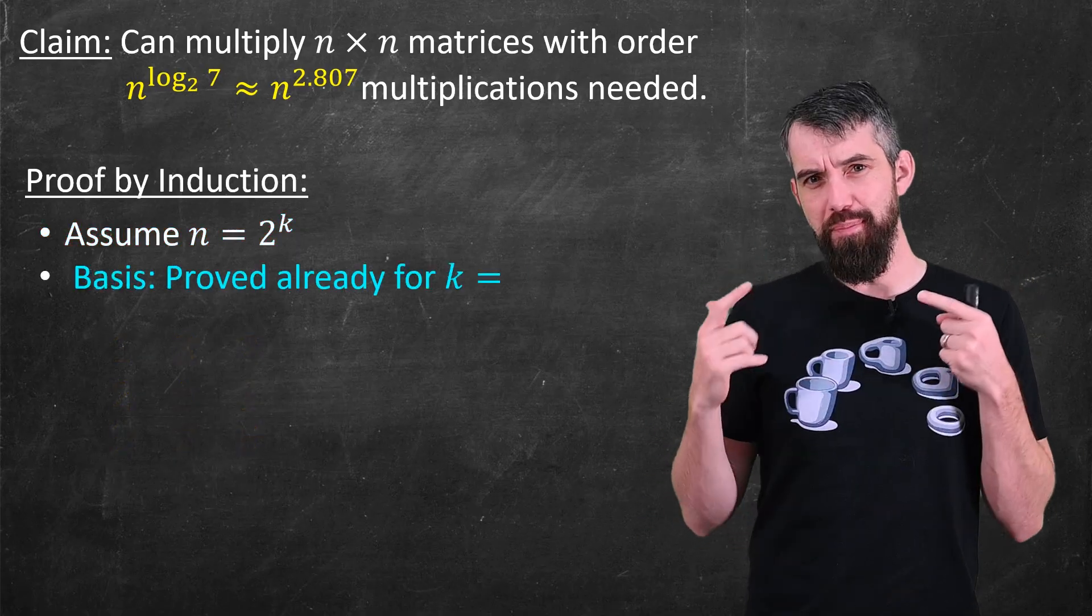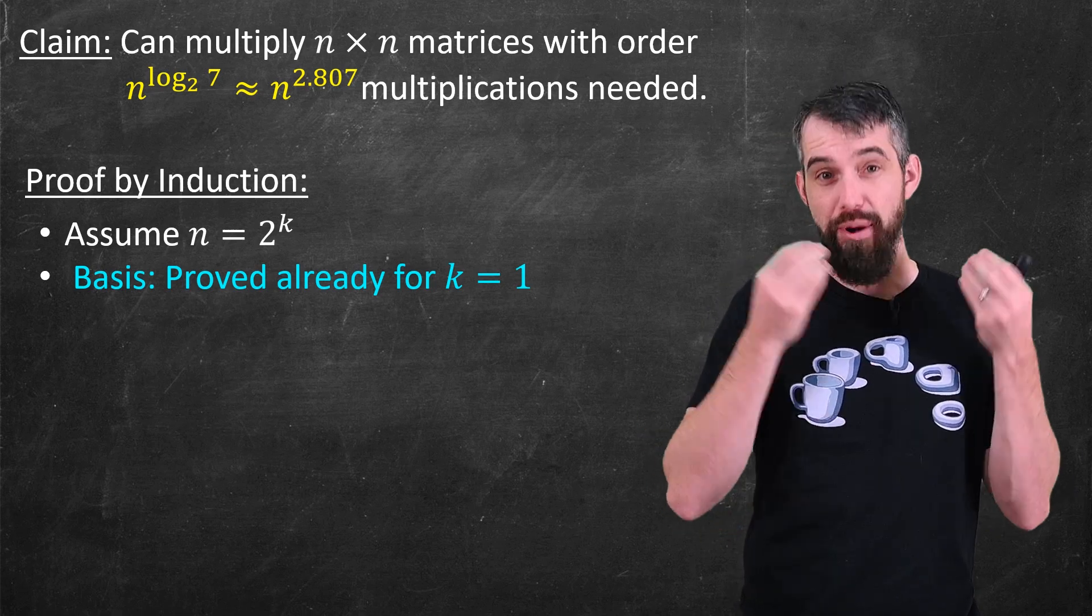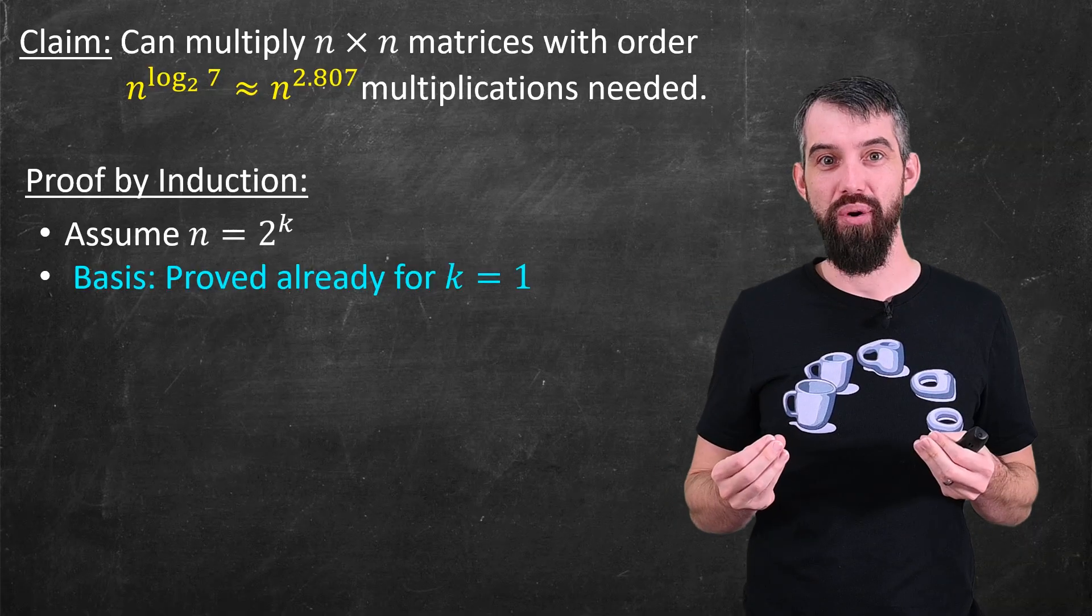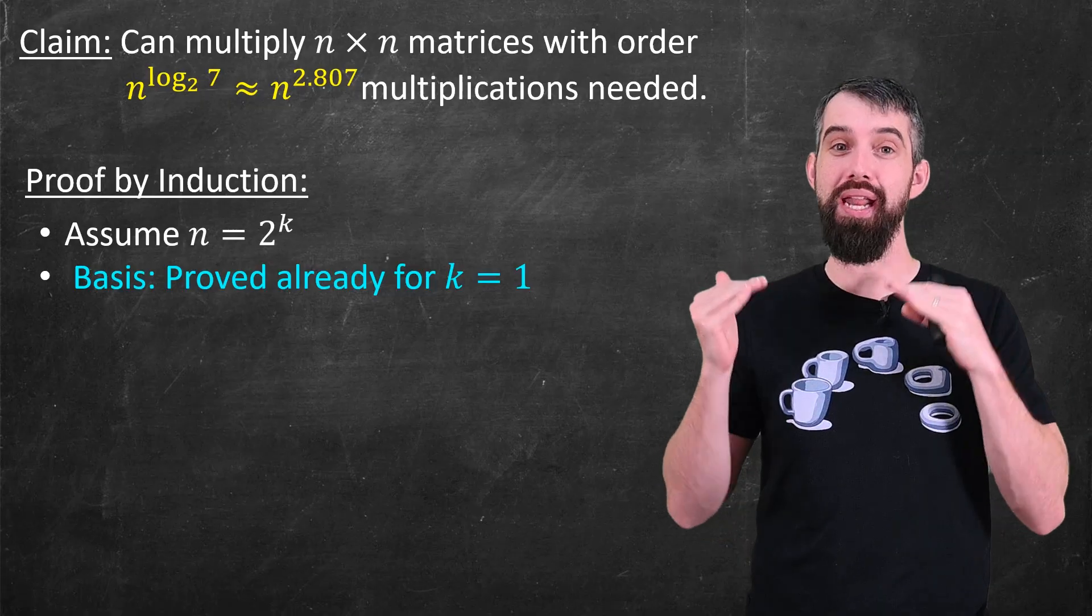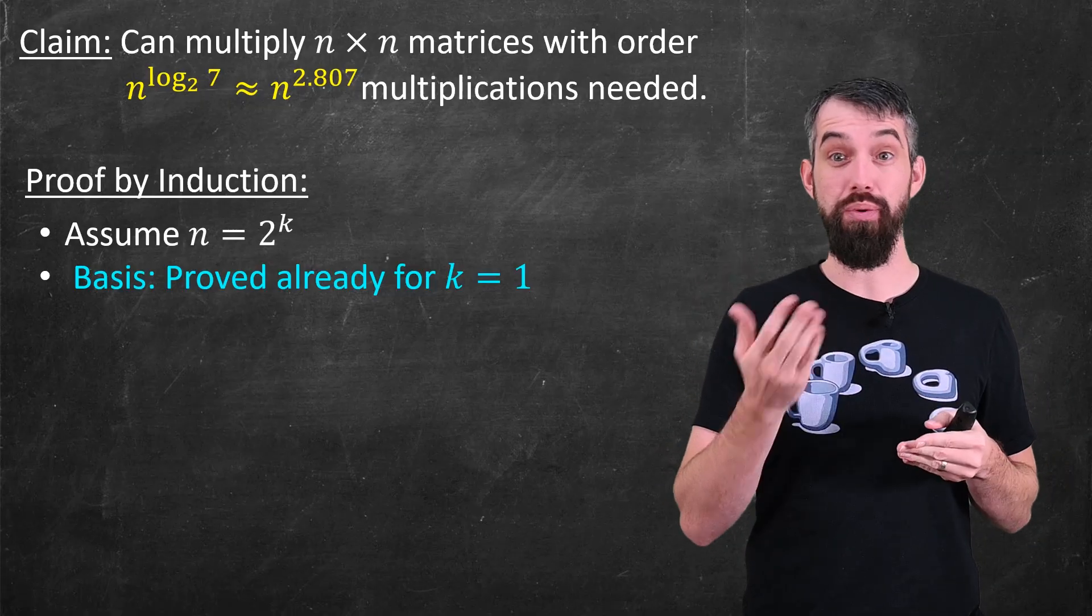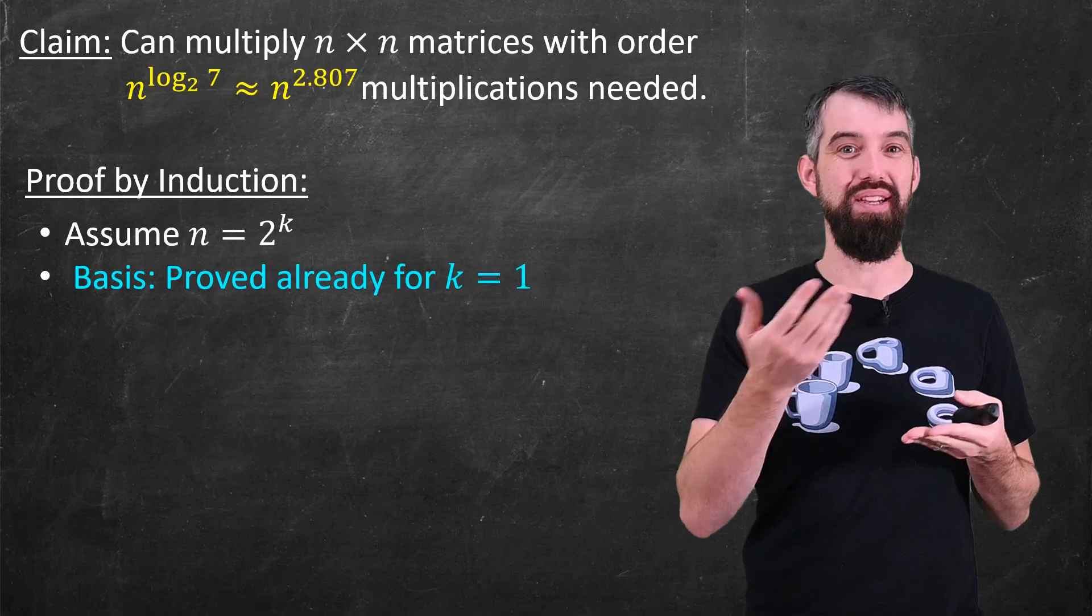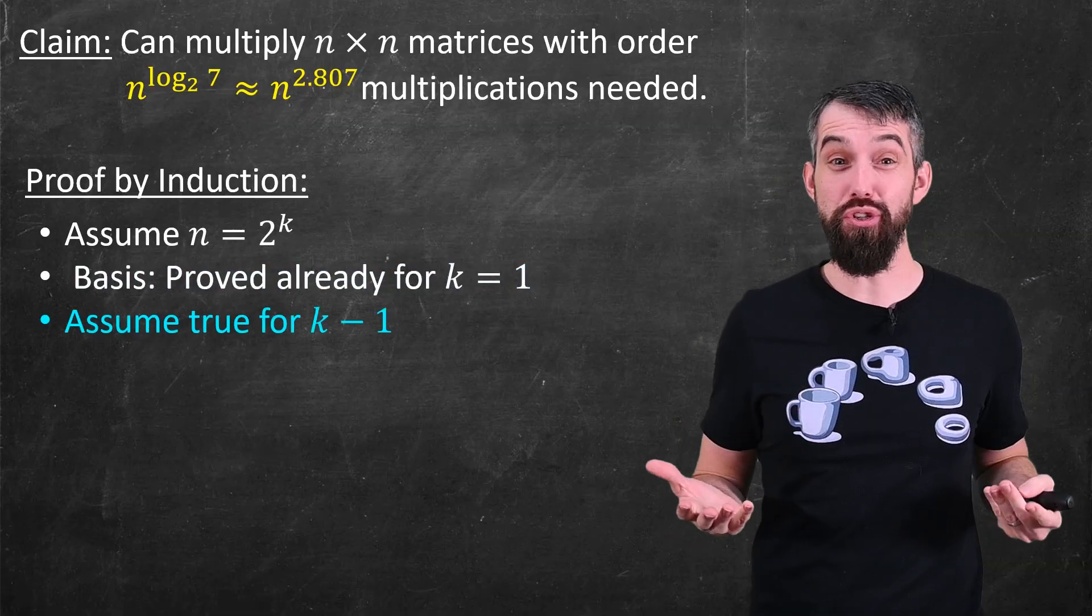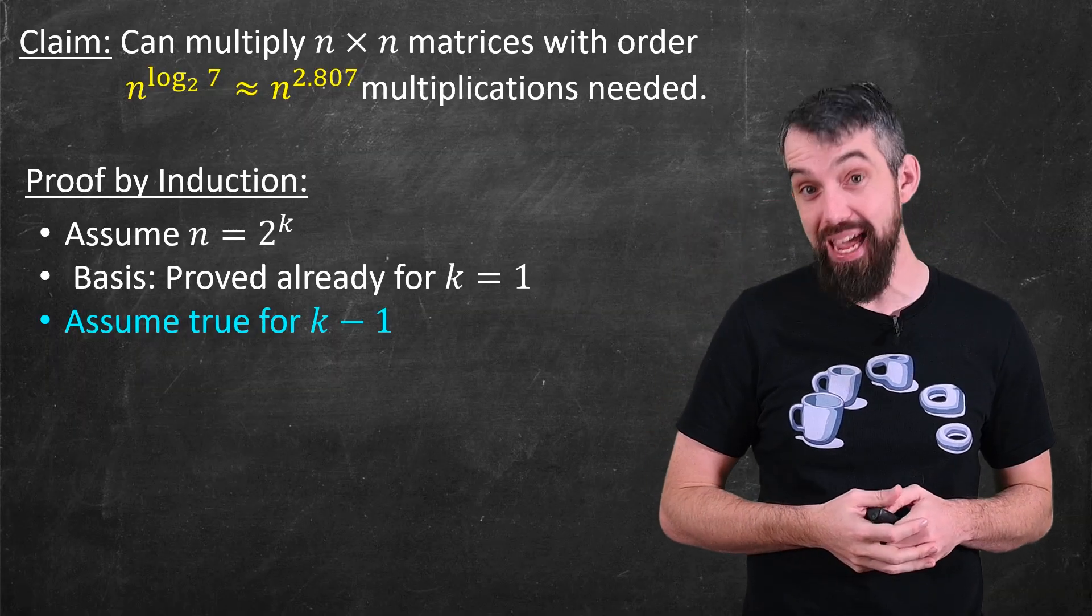Then for the basis, well that's what we just did. When k is equal to 1, n is a 2 by 2 matrix, and we have just seen that we can, in that scenario, use the Strassen algorithm to have 7 multiplications and not 8. Notice that when n is equal to 2, 2 to the logarithm of 2 of 7, the 2 to the logarithm of 2 cancels, and you just get 7. I'm going to assume it's true for the k minus 1 step, and I'm going to prove that it is true for the kth step.